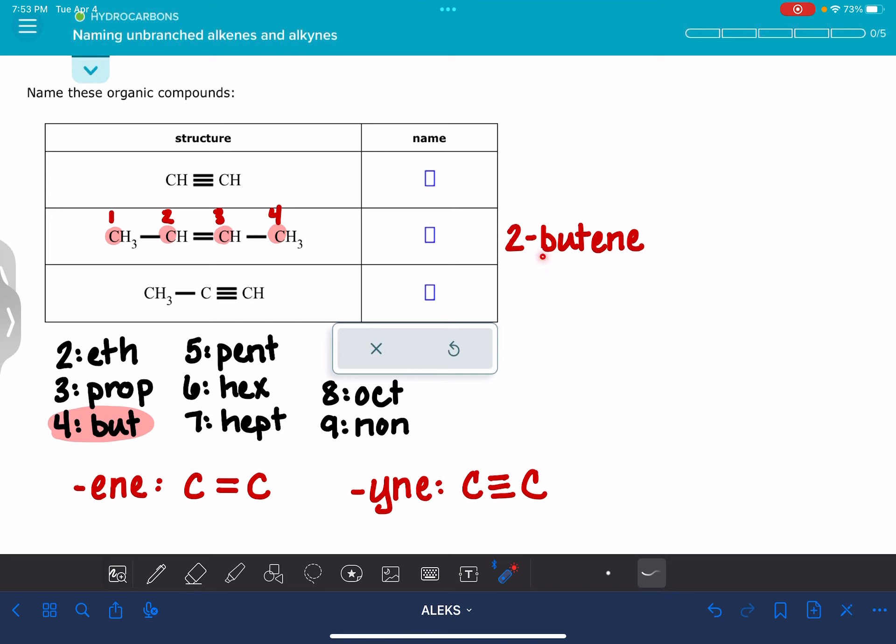So this name tells us that we've got a four carbon chain. The ene part tells us that there is a carbon-carbon double bond, and the two tells us the location of the carbon-carbon double bond. Let's do the third molecule next. Find our carbon chain. This molecule has a three-carbon chain, so that means that we are looking at a prop.